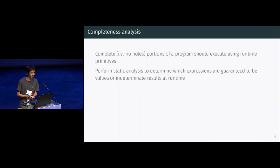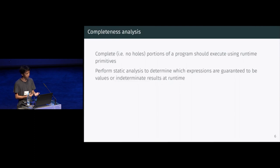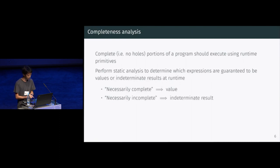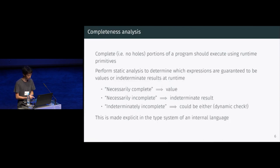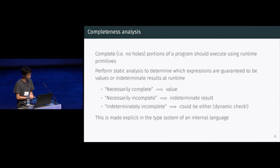Because we want it to be fast, we prefer that when executing, complete parts of the program can use fast runtime primitives. We perform a static analysis to determine whether an expression is guaranteed to be a value or an indeterminate result at runtime. We define this notion of completeness with three options: first, necessarily complete — the expression must be a value at runtime; second, necessarily incomplete; and third, indeterminately incomplete — we can't really know statically. This can arise in the case of failed casts. We make this explicit in the type system of an internal language, represented by K. The filled dot is necessarily complete, unfilled is necessarily incomplete, and half-filled is indeterminately incomplete.